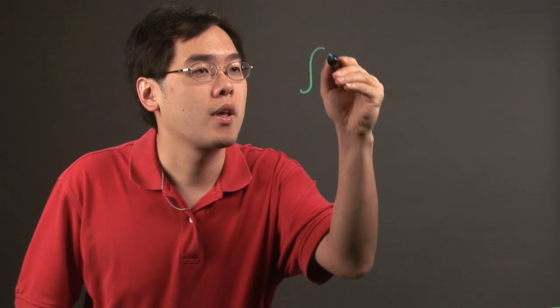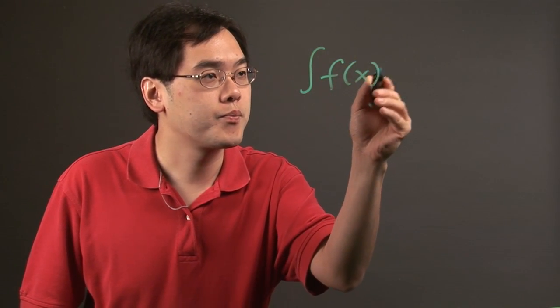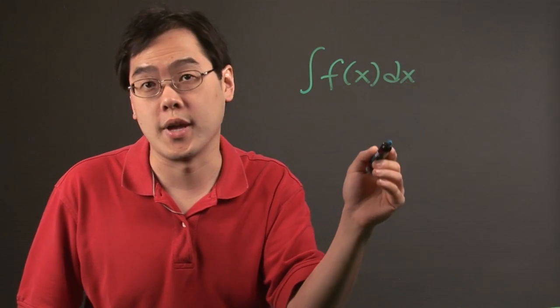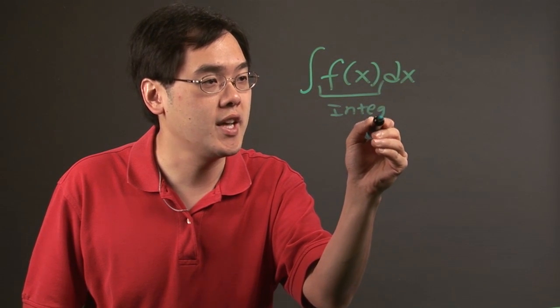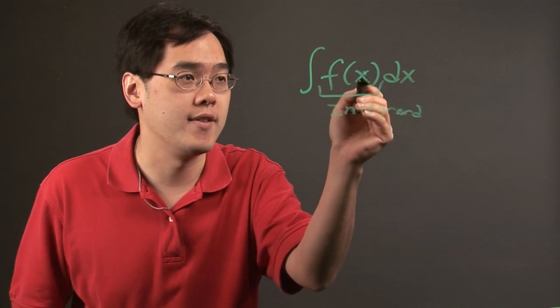In an integral, if you have the integral notation of f(x)dx, dx tells you that you integrate with respect to x. The f(x) is known as the integrand because you will find the antiderivative of that particular function. It's whatever function you have in here.